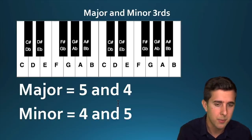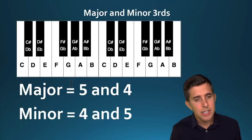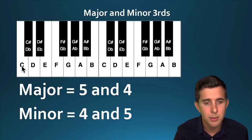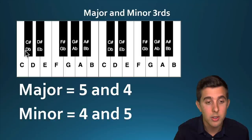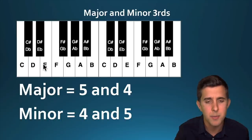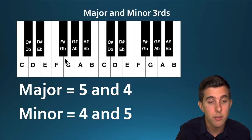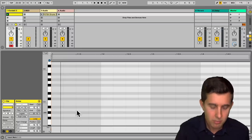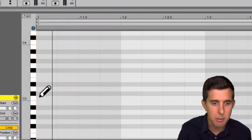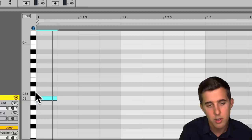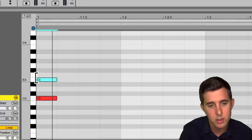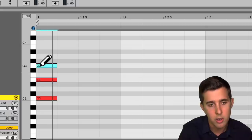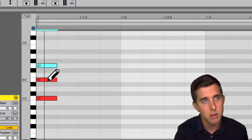So for a major chord, if we count up five semitones from C — one, two, three, four, five — we get to E. Then count up four more — one, two, three, four — we get to G. That's a C major chord: five and four. Let's go into Ableton Live. Counting up five then four from C gives us C, E, G. Playing this — that's a major chord. It should sound happy.